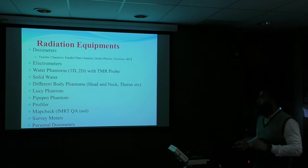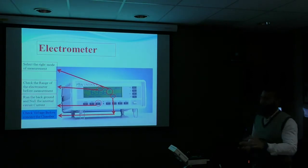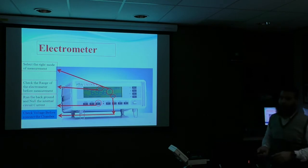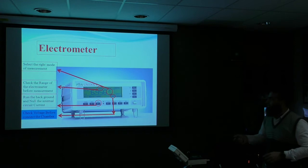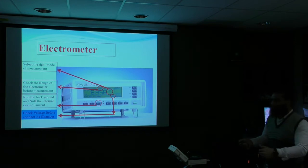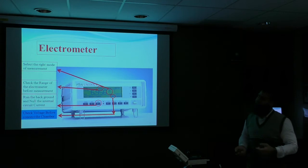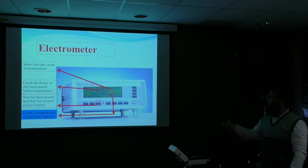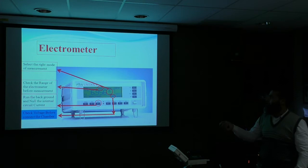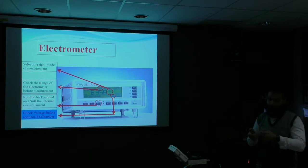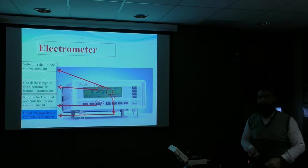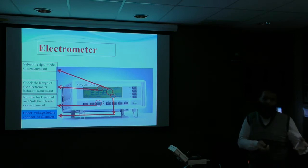Hopefully this will help you a little bit. So this is the first thing - when you go for dosimetry, one of the important things you need to know about is the electrometers. Whenever you switch on the electrometer, before you connect the chamber, you should check all these things. You have to select the right mode, then check the range of the electrometer, because if you don't select the right range it will overload, and overload is not good for the electrometer.